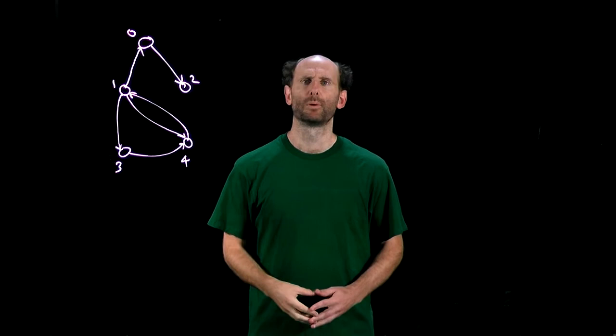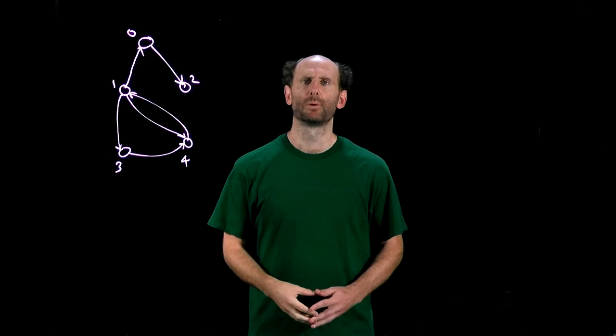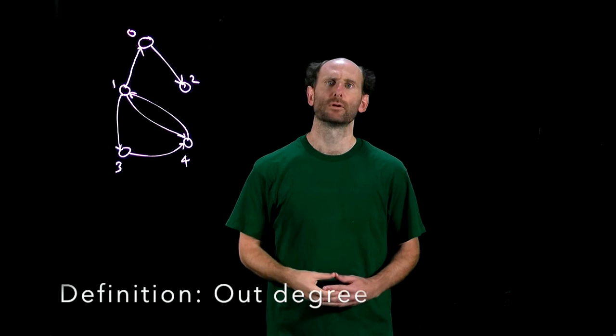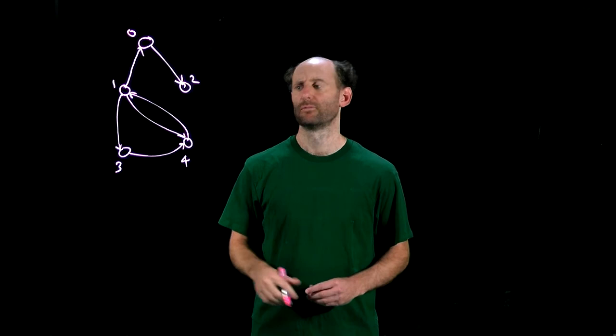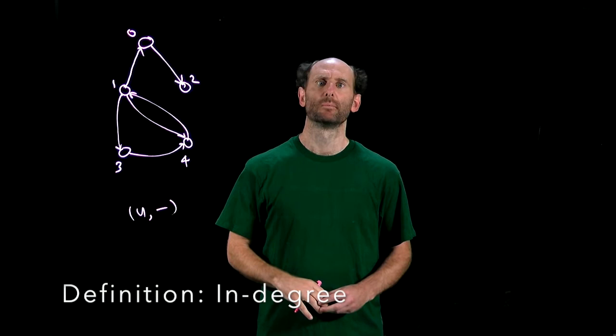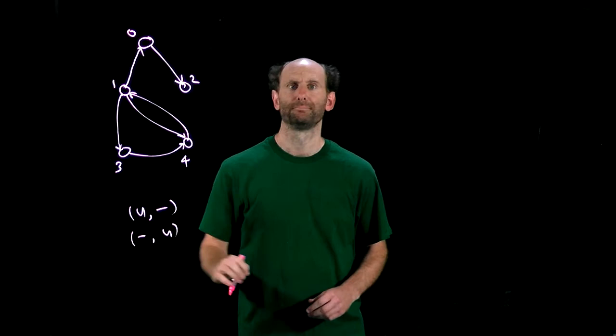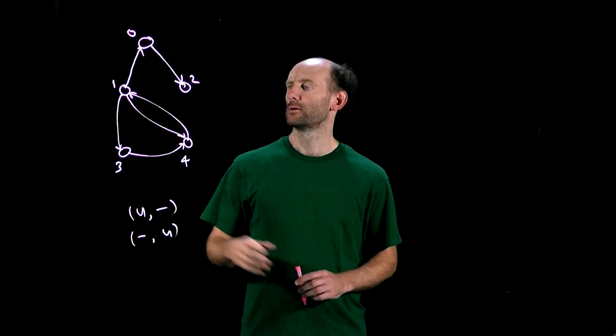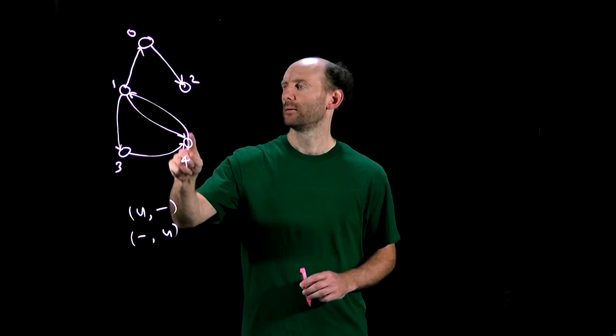An important property of a node in a digraph is the number of arcs adjacent to it. We define the out-degree of a node U as the number of arcs leaving it, so arcs having the form (U, -). And the in-degree is the number of arcs pointing into it, so having the form (-, U). In this digraph, node 4 has in-degree 2 as there are two arrows pointing into it and out-degree 1 as one arc pointing out of it.